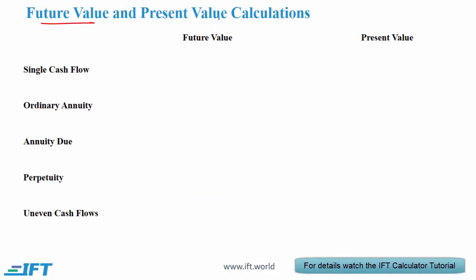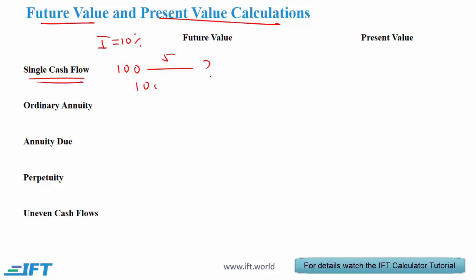Next we look at future value and present value calculations. Let's start with a single cash flow. Say we have $100 today, the interest rate is 10%. How much will this grow to at the end of five years? So this is a future value calculation. One way of doing this is to simply say that the future value is 100 multiplied by 1 plus the interest rate of 10% raised to the power of 5, and this gives us 161.05.